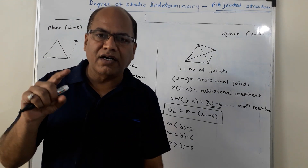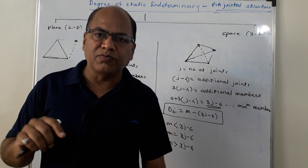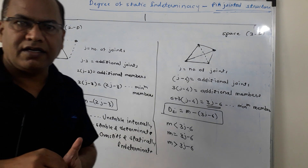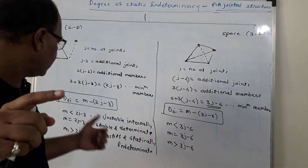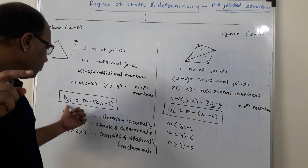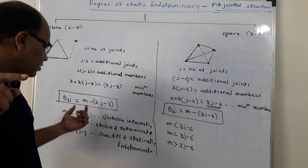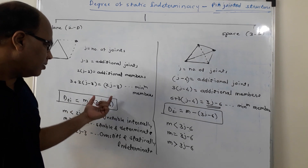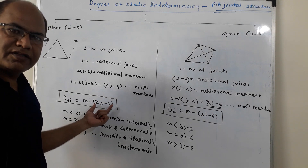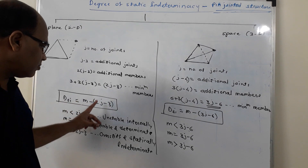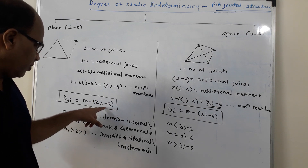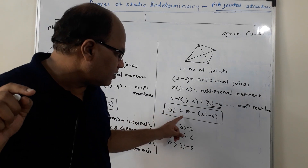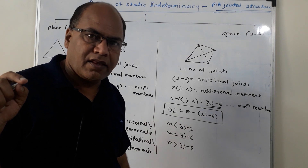If the number of members provided in a pin-jointed structure is more than the minimum number of members required, then the structure becomes statically indeterminate. The degree of static indeterminacy, DSi (internal), depends upon the number of members provided: DSi = m − (2j − 3) for plane structures, and DSi = m − (3j − 6) for space structures.